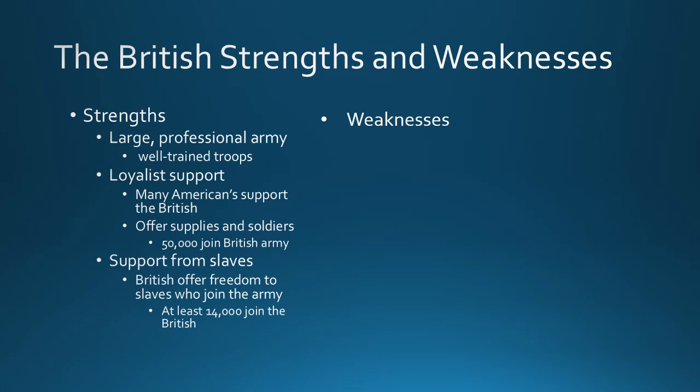Finally, the British enjoyed the support of slaves in the American south. This was because the British offered freedom to any slave who would join the army. By the end of the war, at least 14,000 once-enslaved African Americans had joined the British side. We know there were at least 14,000 because when the British lost the war, they evacuated these 14,000 African Americans to Canada, where they could then live as free individuals.